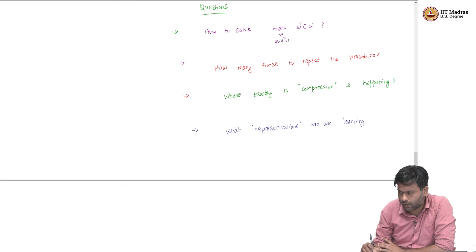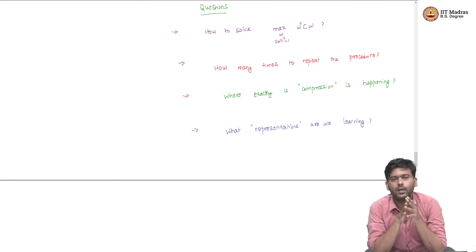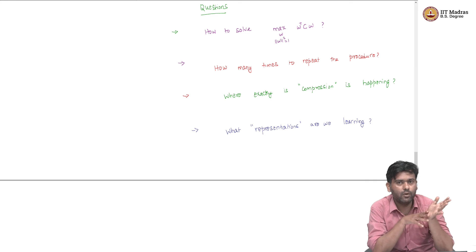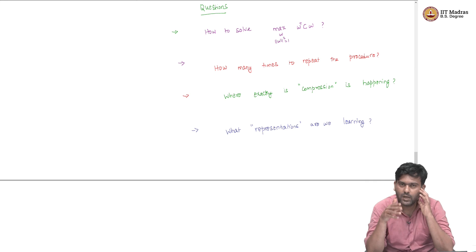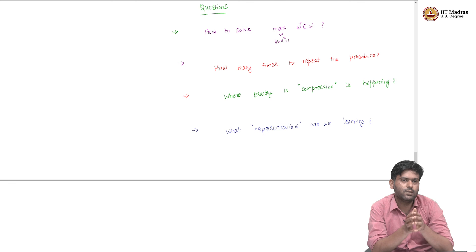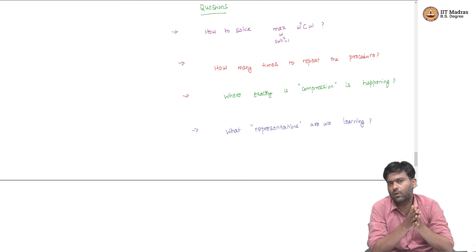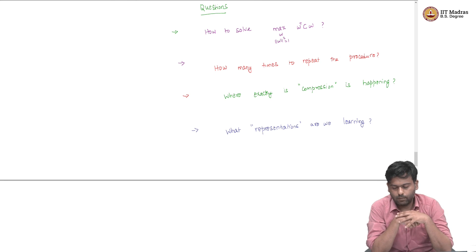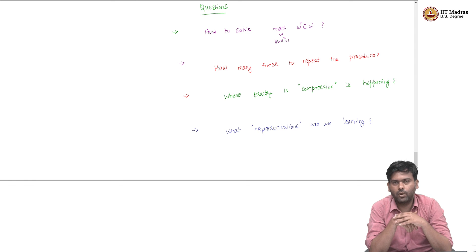If we answer all four questions carefully, that will lead us to a very solid algorithm in data science — our first algorithm for this course, which is a representation learning algorithm for unsupervised learning. I will tell you what this algorithm is once we answer all four questions. Think about these questions to see if you already have some ideas about the answers. We will come back and answer all these questions and develop the algorithm in the next video. Thank you.